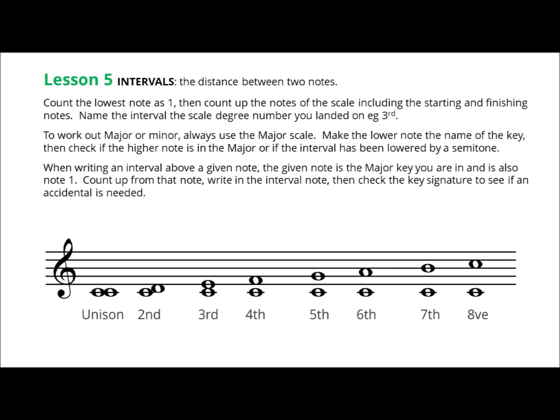Intervals are the distance between two notes. Count the lowest note as 1, then count up the notes of the scale including the starting and finishing notes. And name the interval the scale degree number you landed on, for example a third.